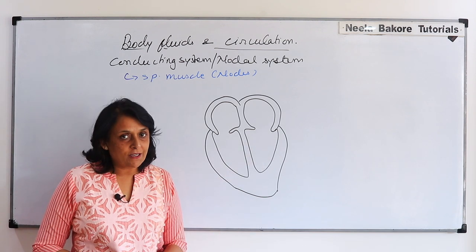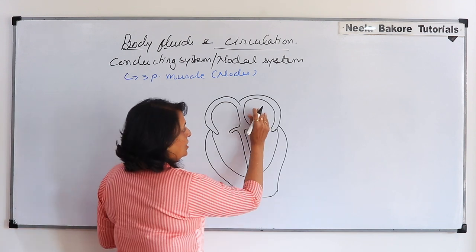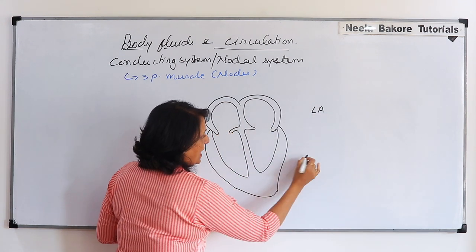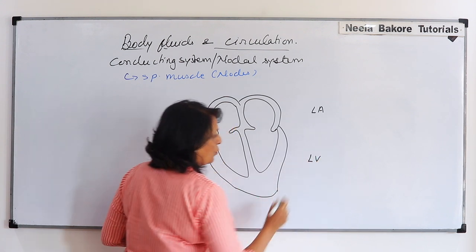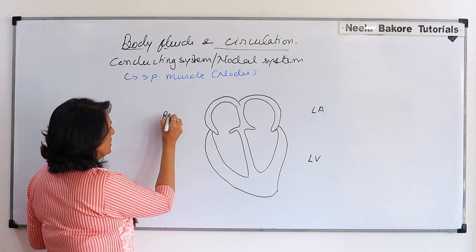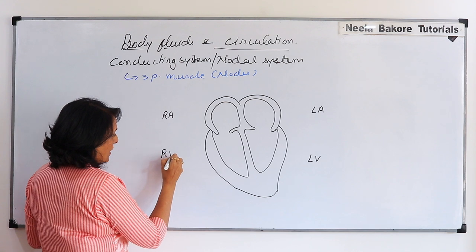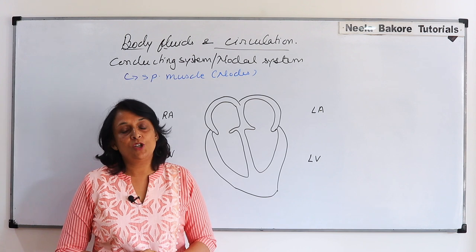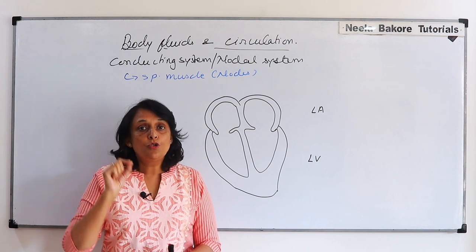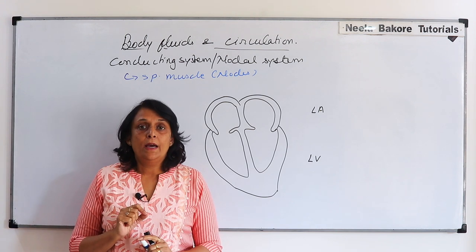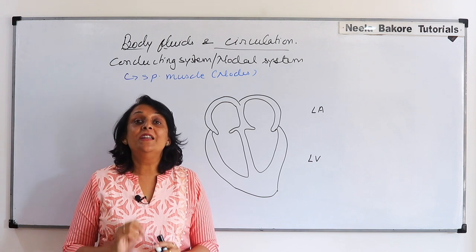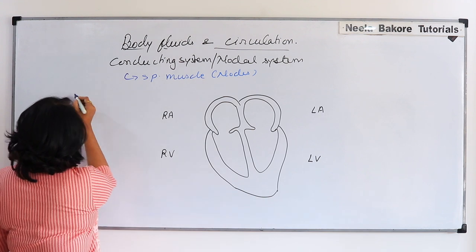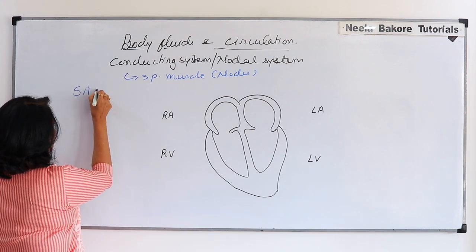We only show four compartments: left auricle, left ventricle, right auricle and right ventricle, because for our location study these compartments are essential. Now the first node in our heart is the SA node.